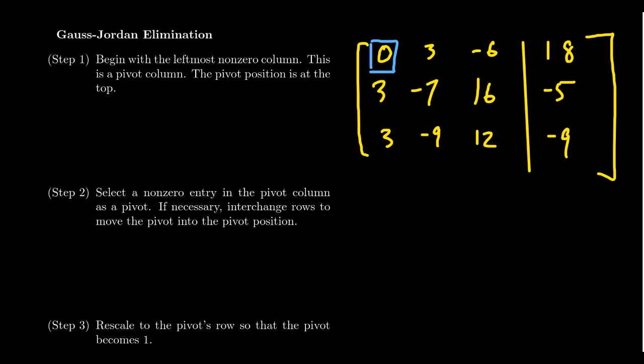Looking at our matrix, there is in fact a zero in the pivot position. We don't want a zero there — ideally we'd love a one, but any non-zero number will work. So we have to put something non-zero in the pivot position using interchange. It doesn't really matter which non-zero entry you choose, as long as you grab one and put it in the pivot position, because it's a non-zero column and there is at least one non-zero number available.